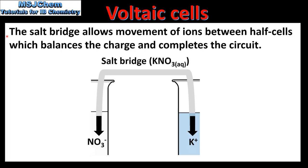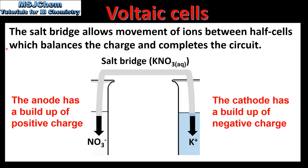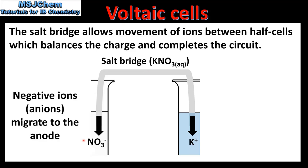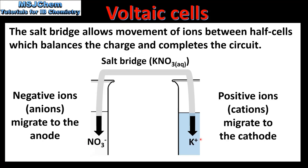Next we'll look at the function of the salt bridge. The salt bridge allows movement of ions between half cells, which balances the charge and completes the circuit. Earlier in the video we saw that the anode has a build up of positive charge and the cathode a build up of negative charge. Ions flowing from the salt bridge help keep both half cells electrically neutral. In this example the salt bridge contains aqueous potassium nitrate, which dissociates into positive potassium ions and negative nitrate ions. The negative ions or anions migrate to the anode, neutralizing the positive charge that builds up there. The positive ions or cations migrate to the cathode, where they neutralize the negative charge that builds up at the cathode.